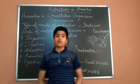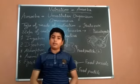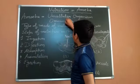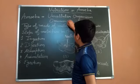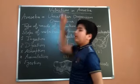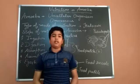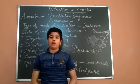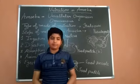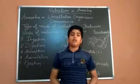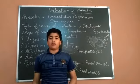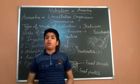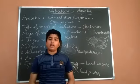Firstly, we will discuss what is Amoeba. Amoeba is a unicellular organism. It is omnivorous and it eats microscopic animals or plants — microscopic organisms that are too small to see with the naked eye.